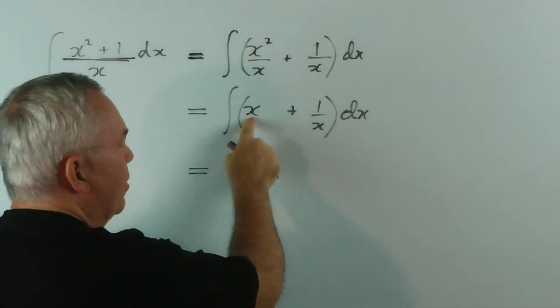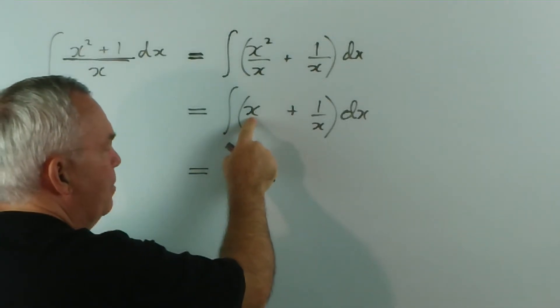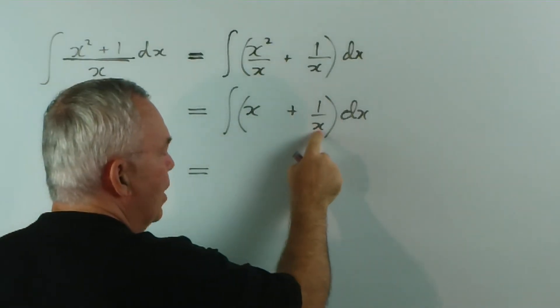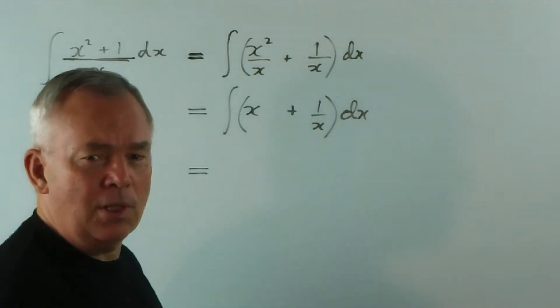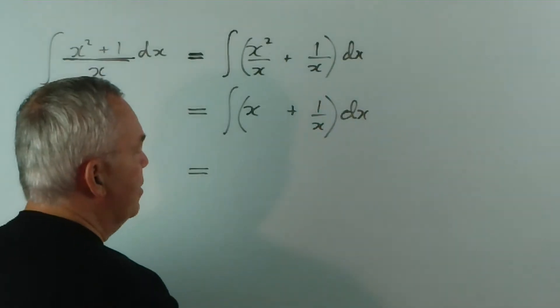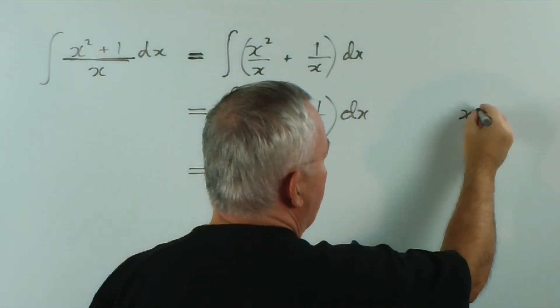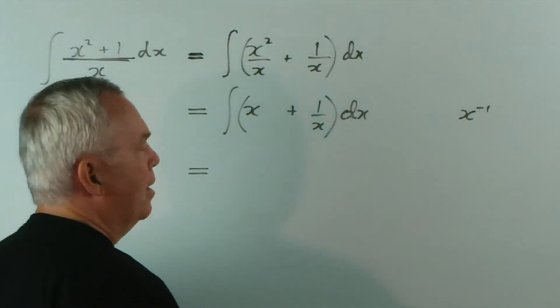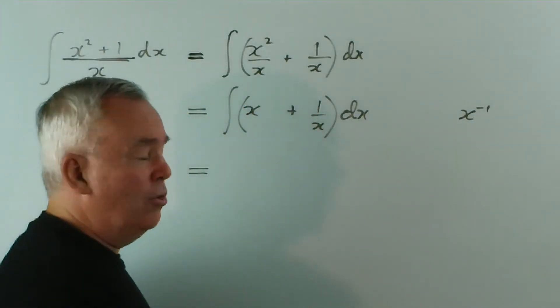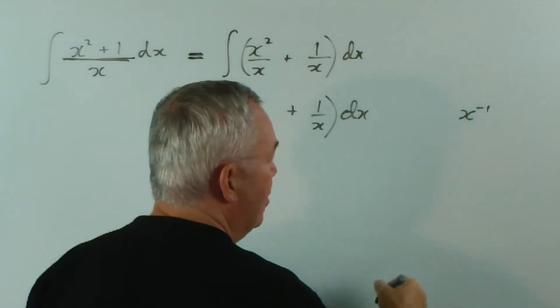Now, this is easy to integrate. It's a power of x already. This one is not initially what you expect as a power of x. If we write that as x to the minus 1, and we try to integrate it using our normal technique for polynomials...